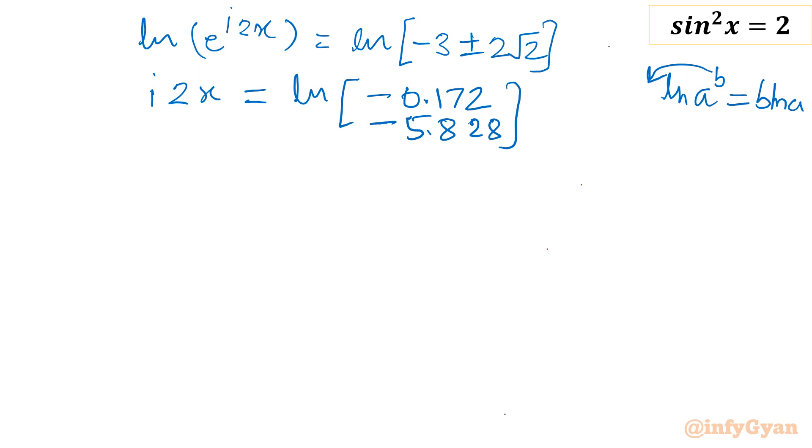Now if you will simplify further, see there are two roots. So one root is minus 3 plus 2 root 2, and the second one is minus 3 minus 2 root 2. Root 2 is 1.414. So if you will simplify this, the first one we will get negative 0.172, and the second one we will get minus 5.828.